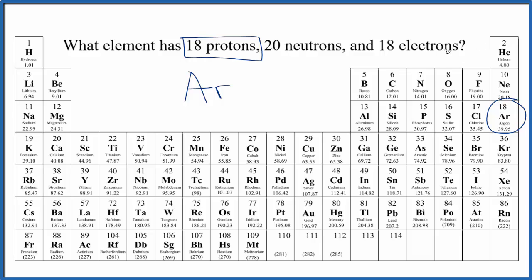If you removed an electron, it would still be argon because it would have 18 protons. But if you lose a negative charge, it would become positive. So it would be Ar+.